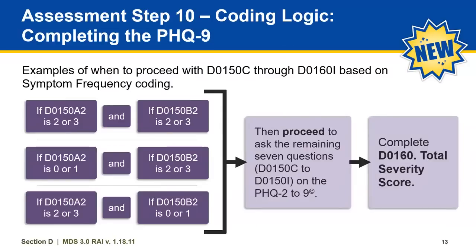There are a few other scenarios for when you would complete the remaining seven questions and code D0160. If D0150A2 and D0150B2 is a 2 or a 3, or if either are scored as a 2 or a 3 and the other is scored with a 0 or a 1, then you would ask the remaining seven questions and complete D0160 total severity score.